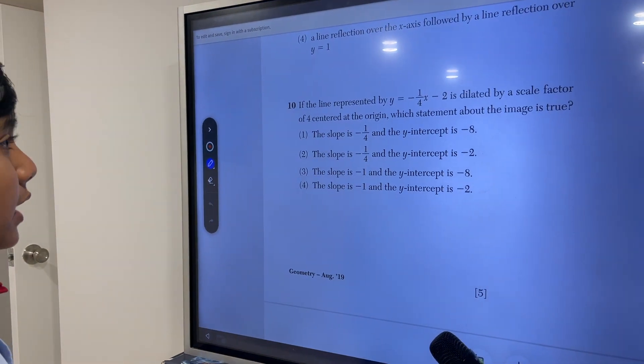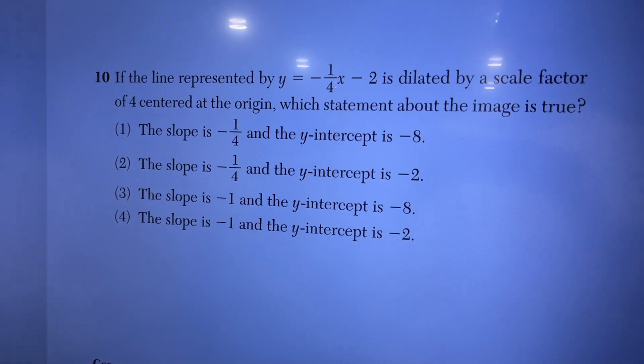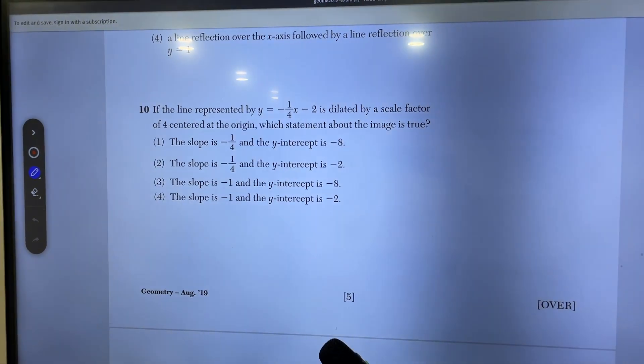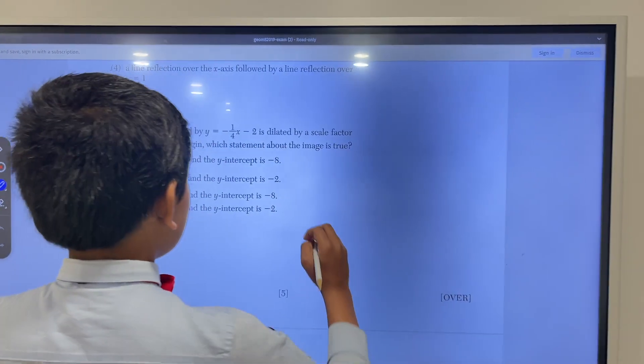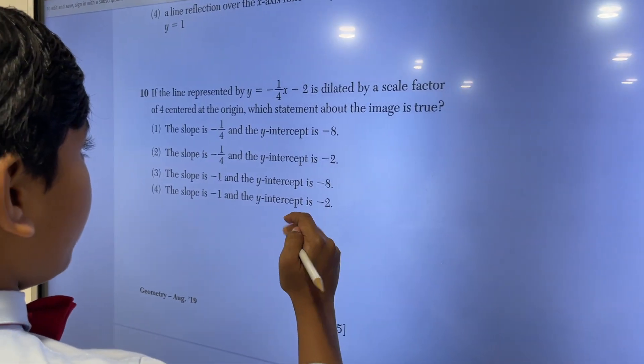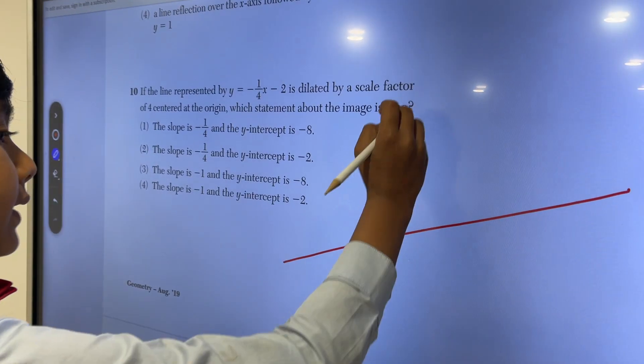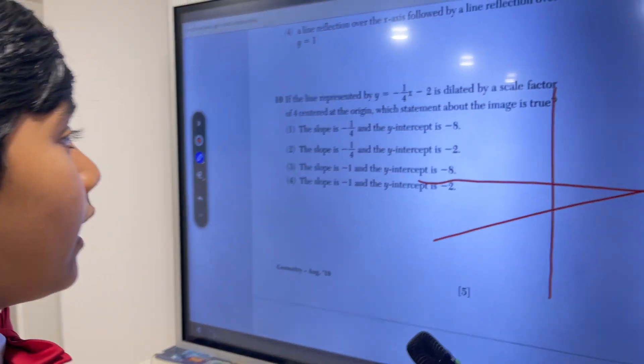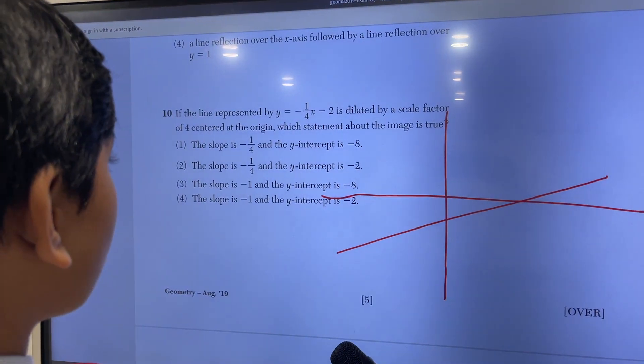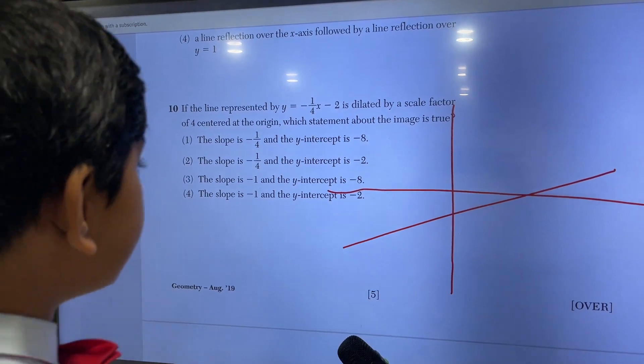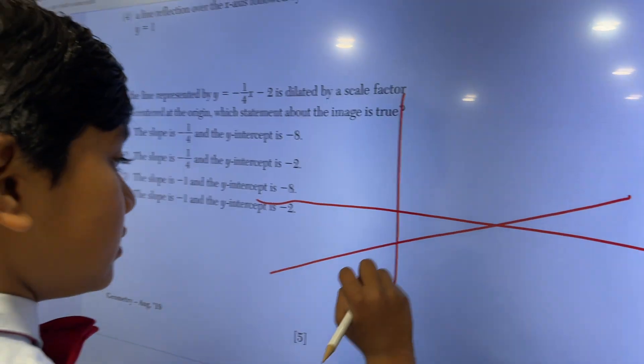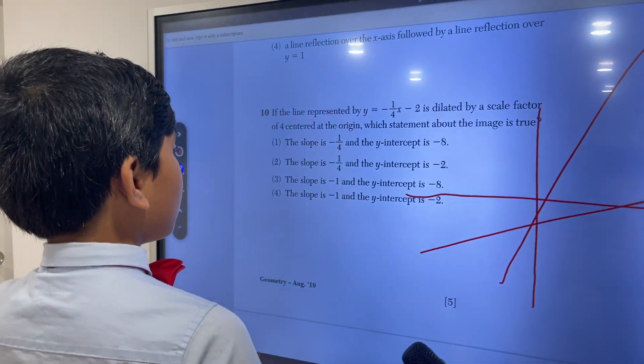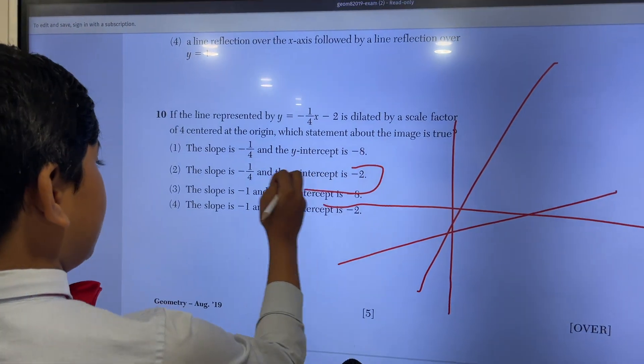Question 10: If the line represented by y equals negative 1/4x minus 2 was dilated by a scale factor of 4 centered at the origin, what statement about the image is true? Let's think about this. Negative 1 over 4x minus 2 would most likely look like this. That's negative 2. However, if you're dilating it by a scale factor of 4 centered at the origin, then it should still have the same y-intercept, but it should have a higher slope since you dilated it. So logically it should be 2.